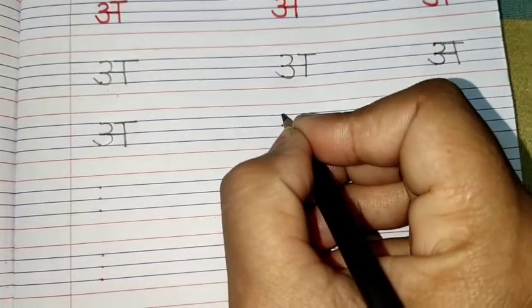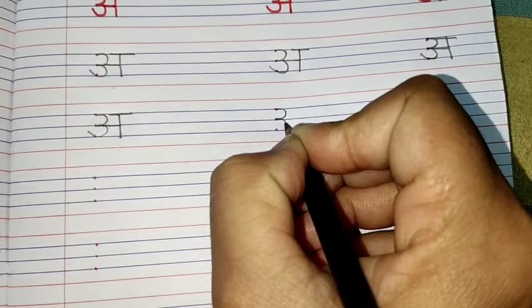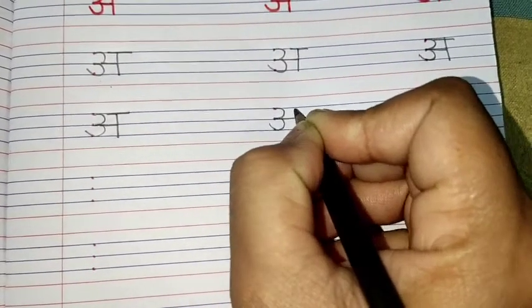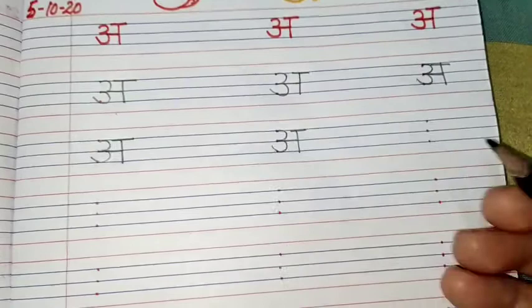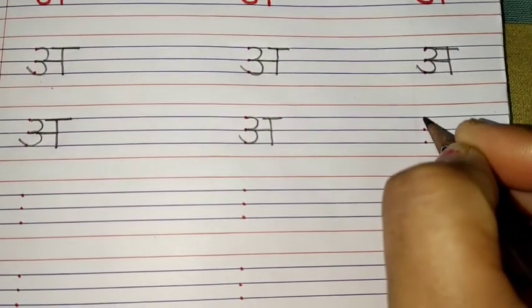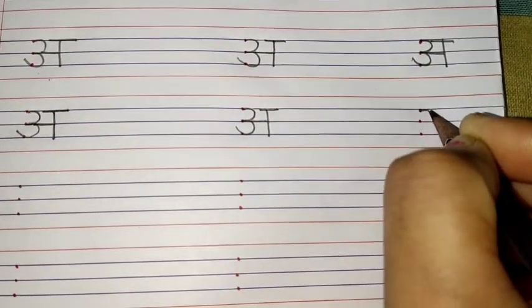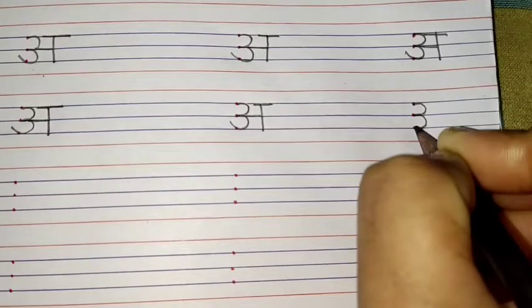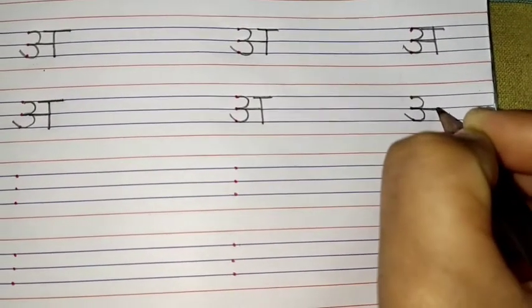A se ajgar. A se adrak. A. Kaisi likhenge? Chalo, ma'am ke saath likhna try karo.